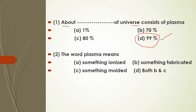The next question: the word 'plasma' means something ionized, something fabricated, or something molded. The correct answer is option B — the word plasma means something fabricated or molded.